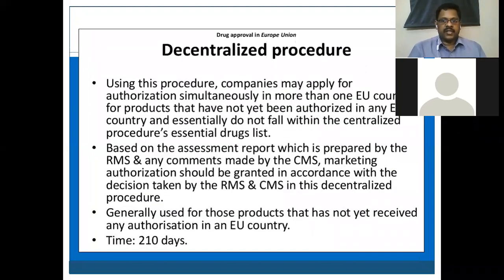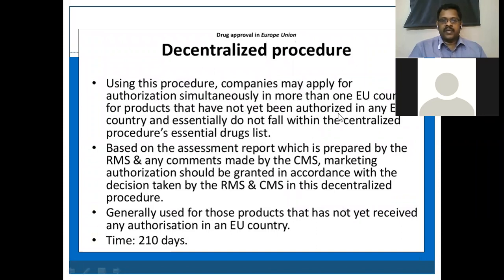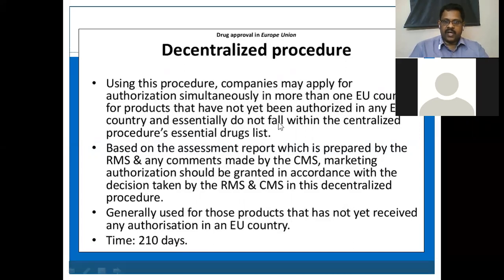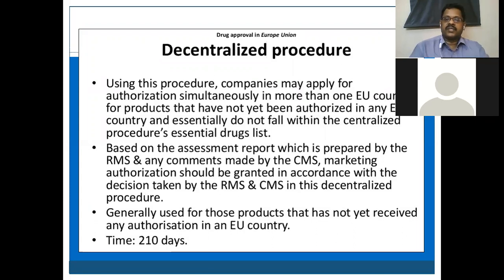The decentralized procedure is another procedure for filing a marketing authorization application. Companies may apply for authorization simultaneously in more than one European Union country for products that have not yet been authorized in any EU country. The product must also not fall within the centralized procedure's essential drug list — which includes AIDS, cancer, autoimmune diseases, and rare diseases. Then such applications will be accepted.